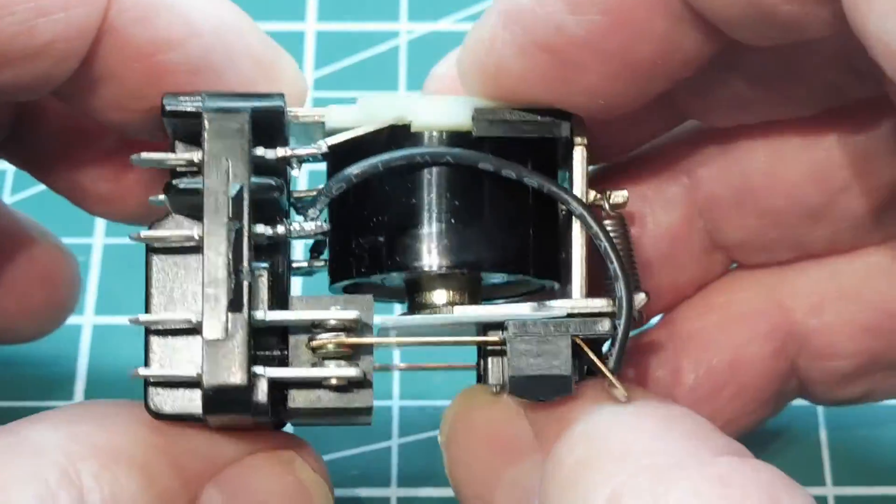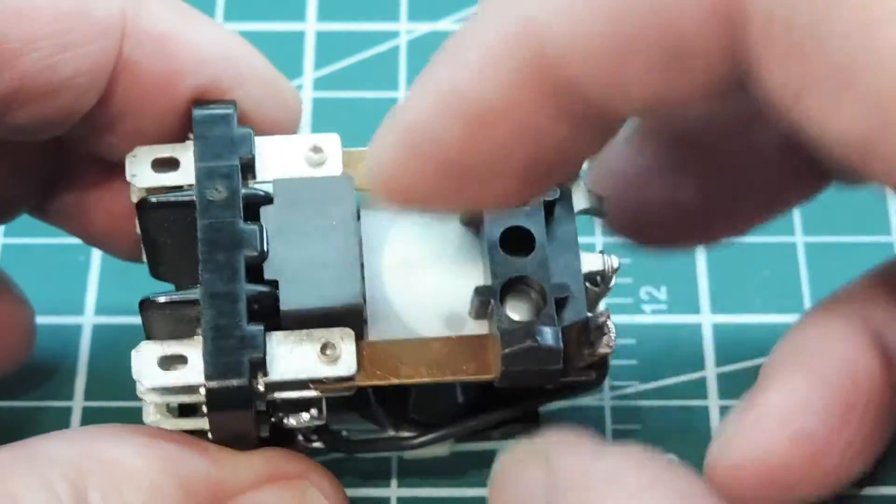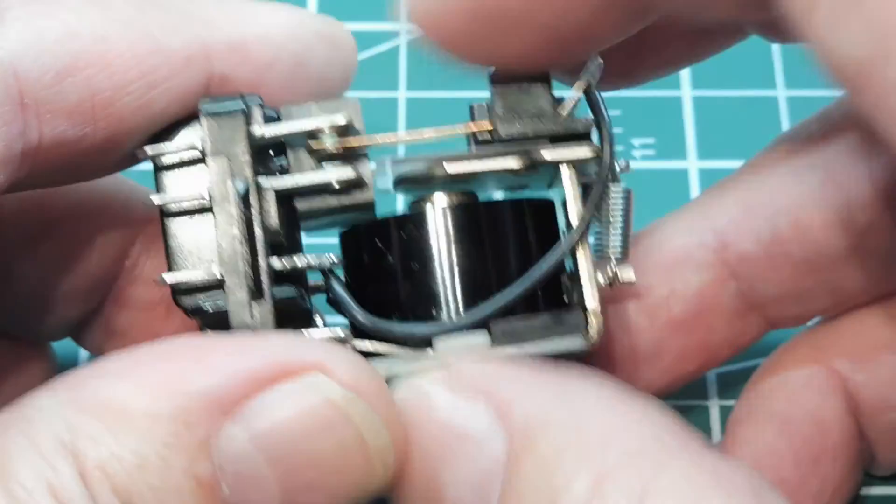And that will extend the contact life of the relay. So that's one way that they've solved the problem of burnt contacts on relays, is to use a magnetic field to interact with the plasma.